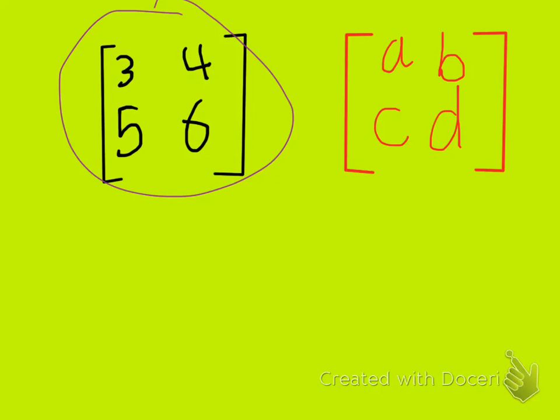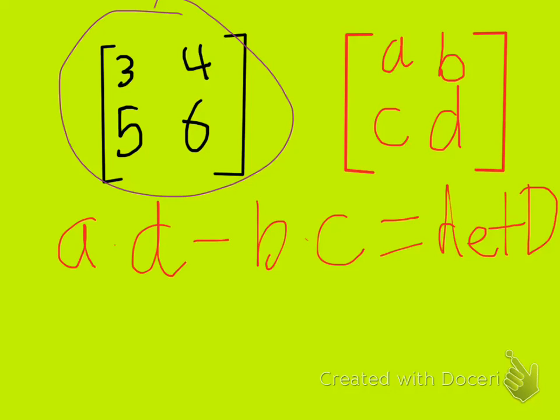We have a times d minus b times c equals our determinant.